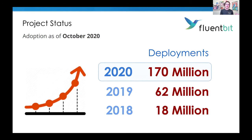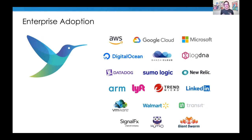From a community perspective, as of last month in October, we hit 170 million deployments for this year. We think we're going to close 200 million for the whole year — crazy numbers showing huge traction in the project. This is thanks to every enterprise company, cloud provider, and service provider. Fluent Bit supports the three major cloud providers — AWS, Google Cloud, and Microsoft — and others like DigitalOcean, Packet Cloud, and so on.